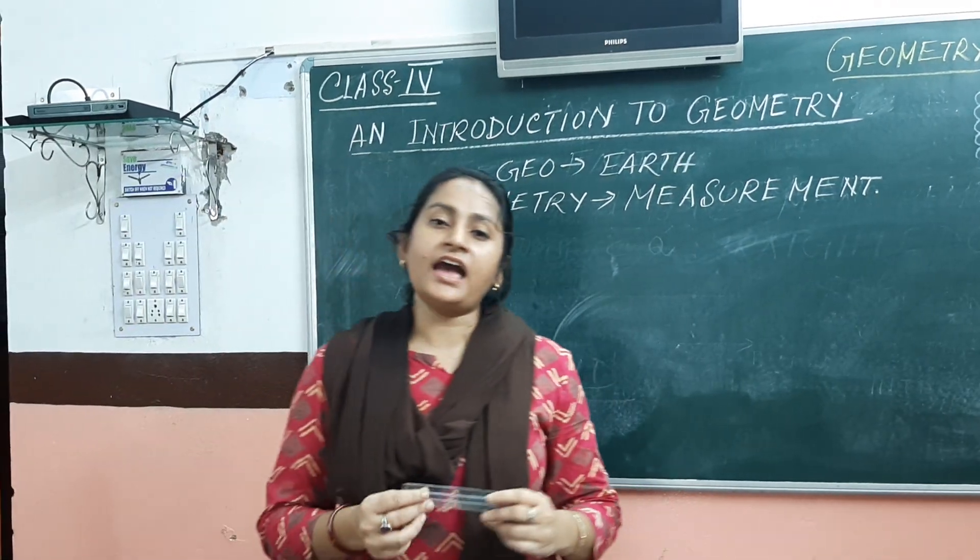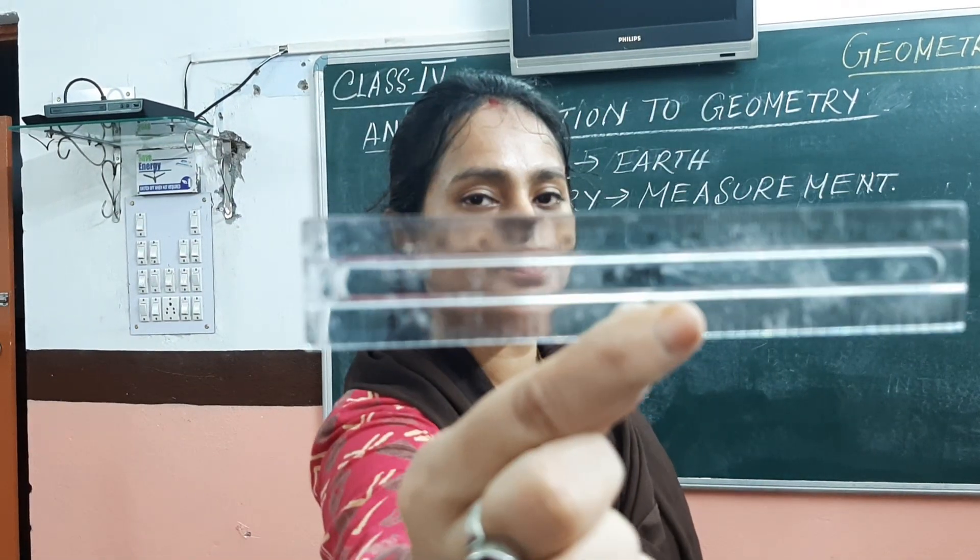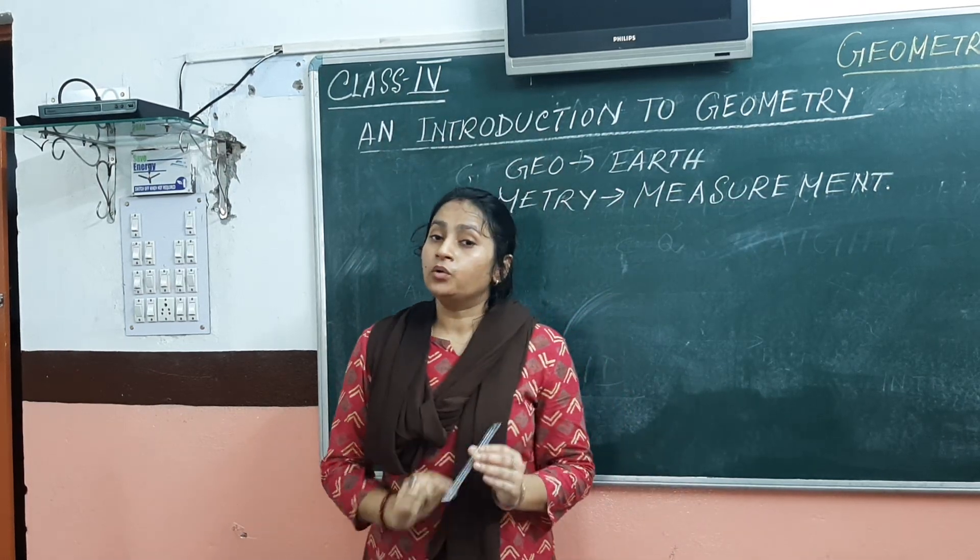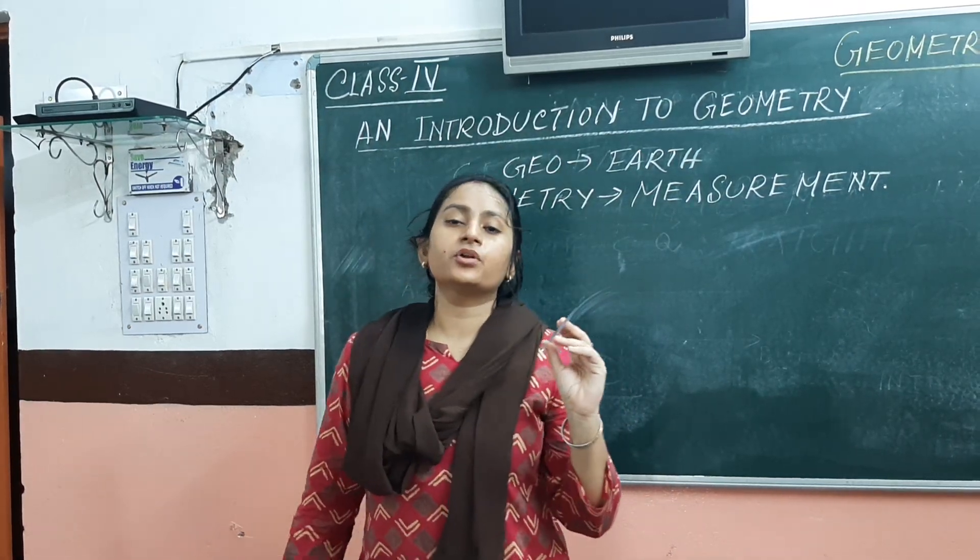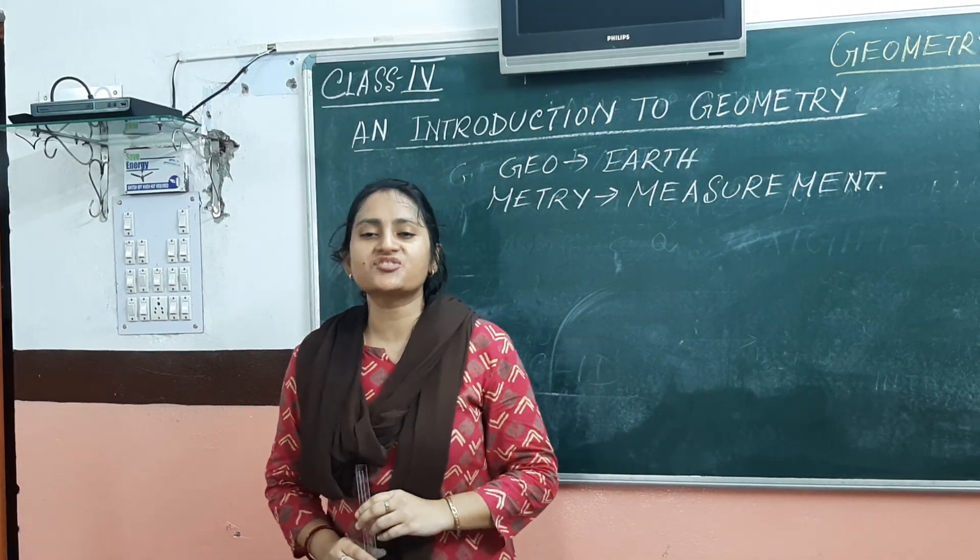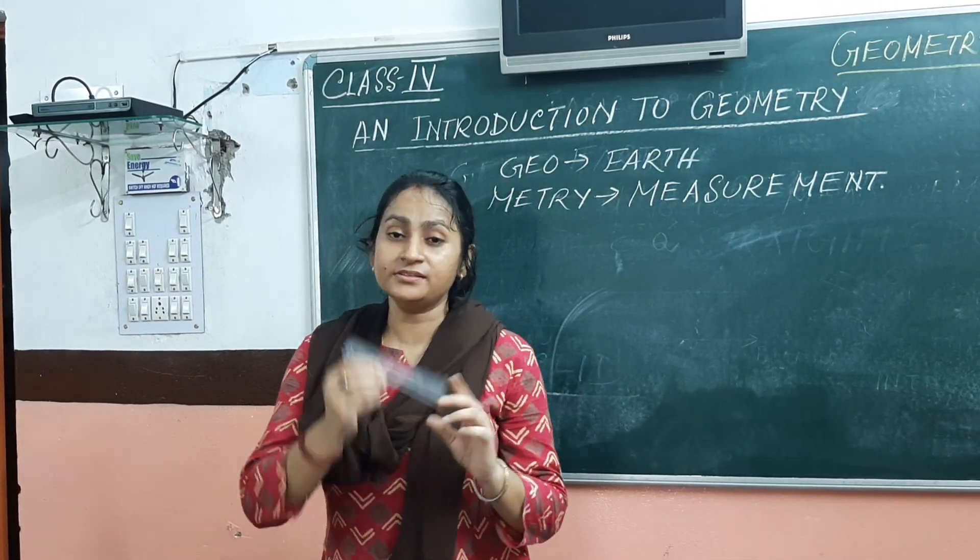Firstly, we have this ruler. Can you see? This is a ruler. Now you know the other name for ruler is straight edge. Why? Because we draw straight lines with the help of this ruler.